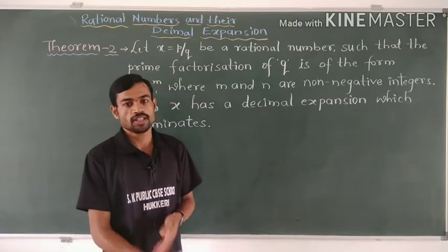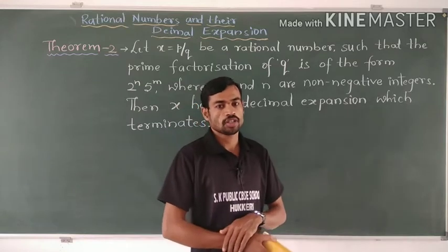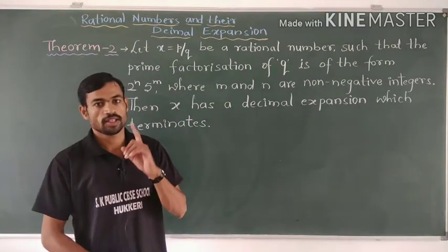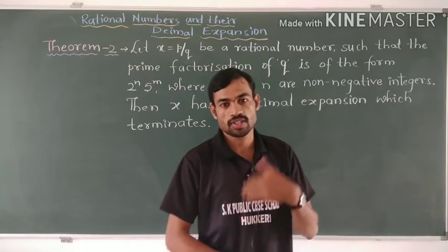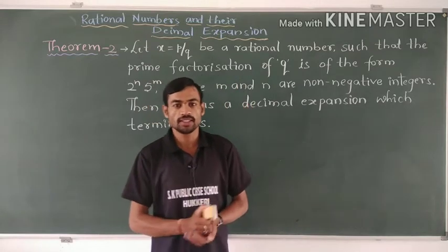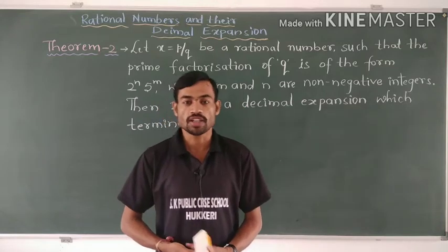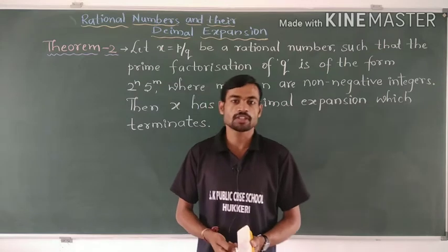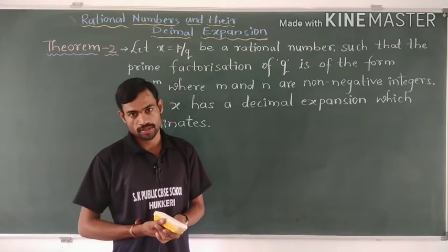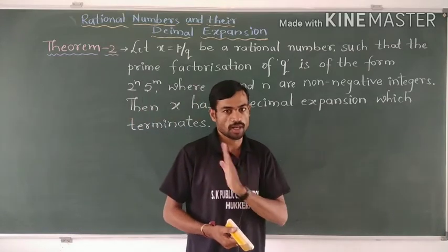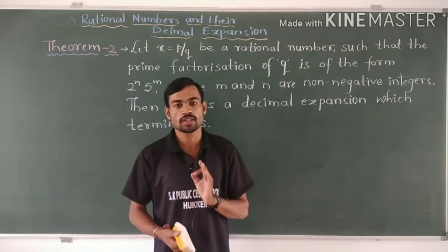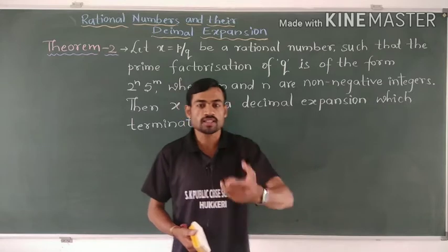Dear students, yesterday we have seen that revisiting rational numbers and their decimal expansion. In that we have also discussed Theorem 1. So what does the first theorem state? I am going to recall it. The first theorem statement is: let x be a rational number whose decimal expansion terminates. Then x can be expressed as P by Q.